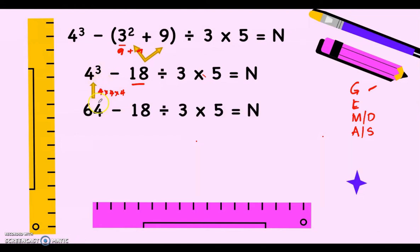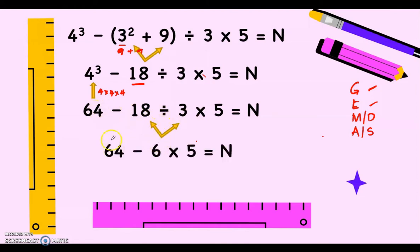So 4 cubed is 64. The rest of the numbers you just copy: minus 18 divided by 3 times 5 equals n. We perform multiplication or division whichever comes first. In this new equation, division comes before multiplication, so we divide first: 18 divided by 3 is 6. The rest you copy: 64 minus 6 times 5 equals n. Then we multiply: 6 times 5 is 30.